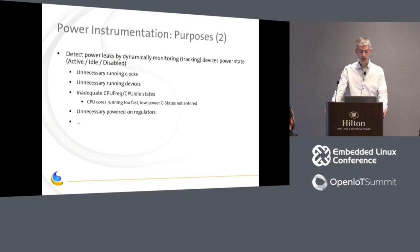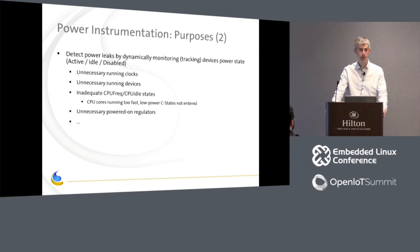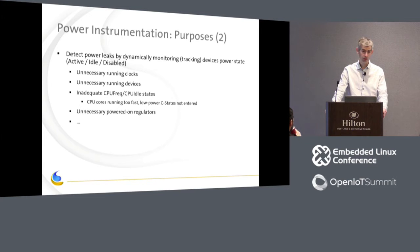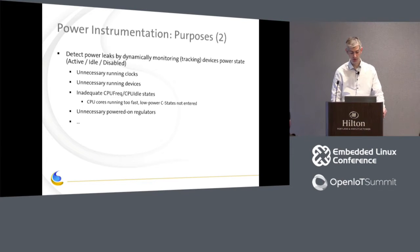Another purpose is about helping people detect and debug power leaks — unnecessary devices that are left on or in power-consuming states. This increases power consumption and reduces battery life, and has to be tracked down. Examples include running clocks, running devices, inadequate clock rates, inadequate CPU frequencies, CPU idle states not being entered, regulators that are powered on, or GPIOs leaking because they are not left in a high-impedance state. For people used to power debugging, these are the regular issues we face.